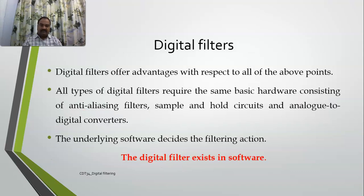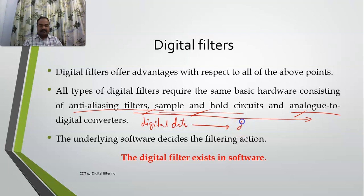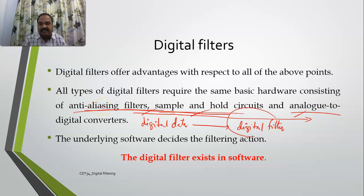The advantages of digital filters: they require the same basic hardware — anti-aliasing filters, sample-and-hold circuits to convert data into discrete form, and ADC converters. Once data passes through these components, it is automatically converted into digital data. This digital data is fed to the digital filter, which filters out unwanted harmonics. The digital filter exists in software, not in hardware — it comes into picture only once data is fully converted to digital.